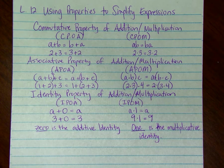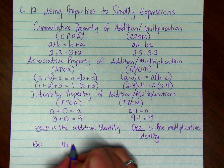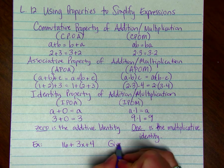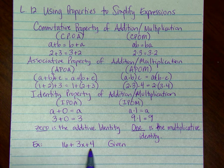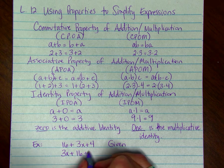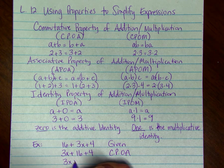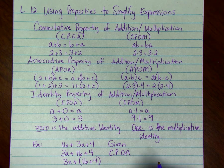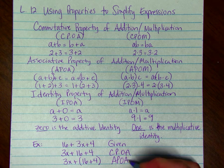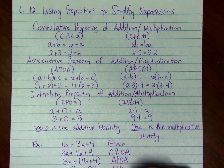Now, in order to use properties to simplify expressions, here's an example. You write down the problem that is given. I want to add the constants 16 and 4, but first I need to switch the 3x and the 16 — when we change the order in addition, that is the commutative property of addition. Then I put parentheses around 16 and 4, which is the associative property of addition. We perform the addition and get 3x plus 20.